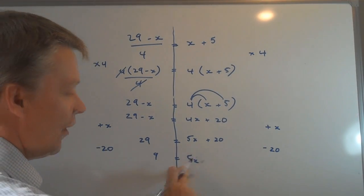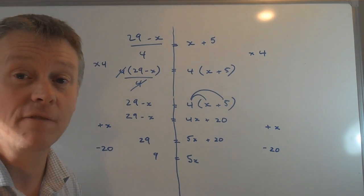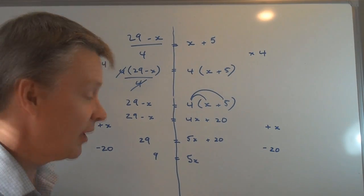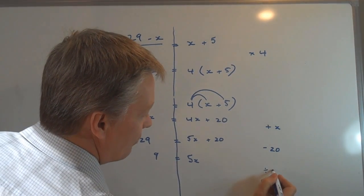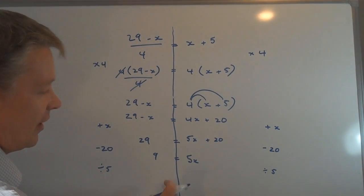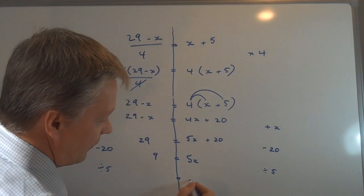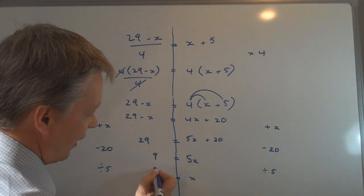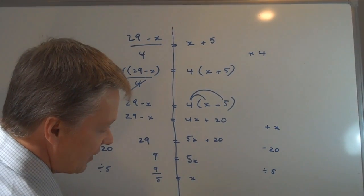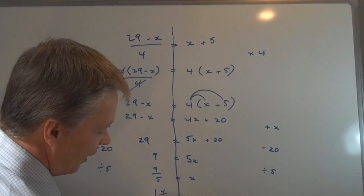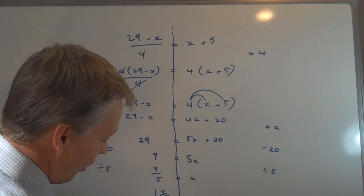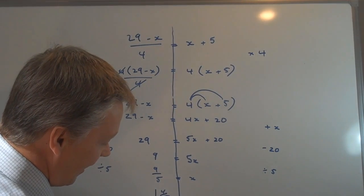I've now got 5x. In order to find a value of x, of 1x, I need to divide both sides of the equation by 5. So if I divide this side by 5, and divide this side by 5, I've got x on this side. And on this side, I've got 9 divided by 5. Or if you prefer x = 1 and 4/5. Or if you prefer, it would be 1.8 as a decimal.